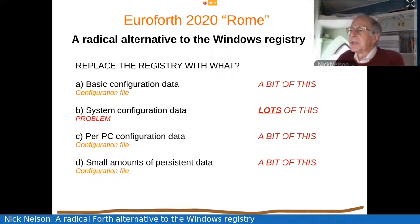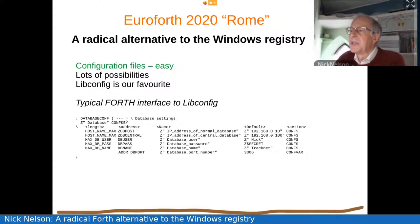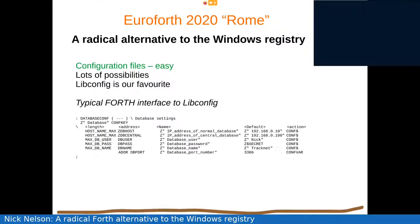So what were we going to replace the registry with? Items A, C, and D we replaced with configuration files. It was item B — the large amount of system configuration data — which gave us the problem. Briefly, in Linux there are loads of different possibilities for config files; libconfig is our favorite. Here is a typical interface to one of the configuration files, where we specify the details of the data, the name, and default values, with a word on the right-hand side that deals with either string data or value data. That's pretty straightforward.